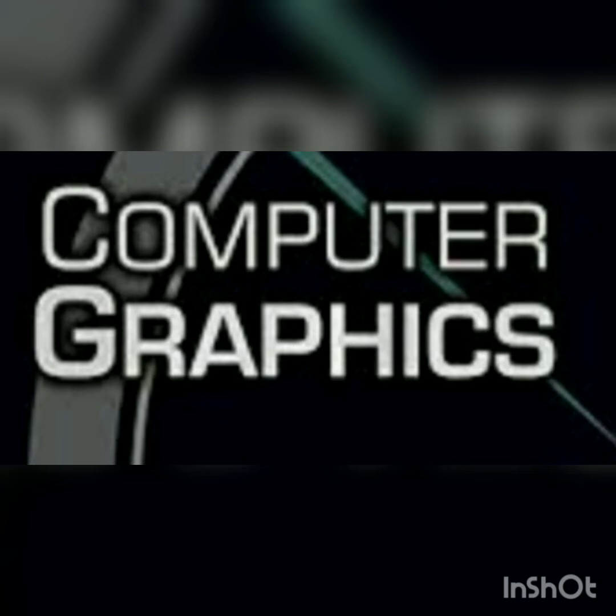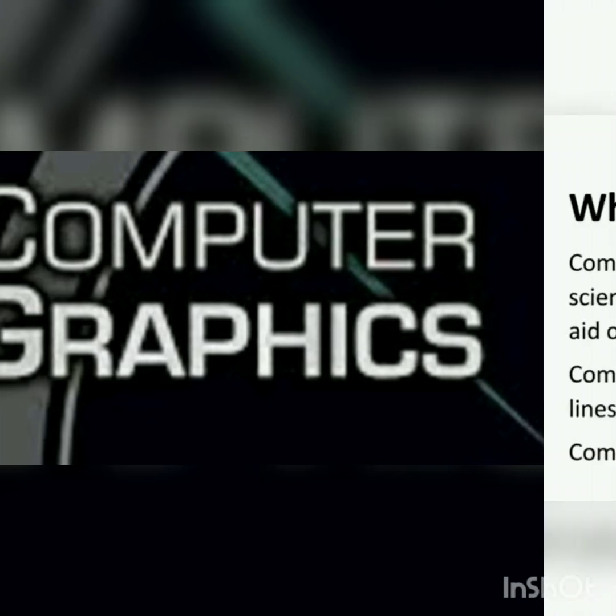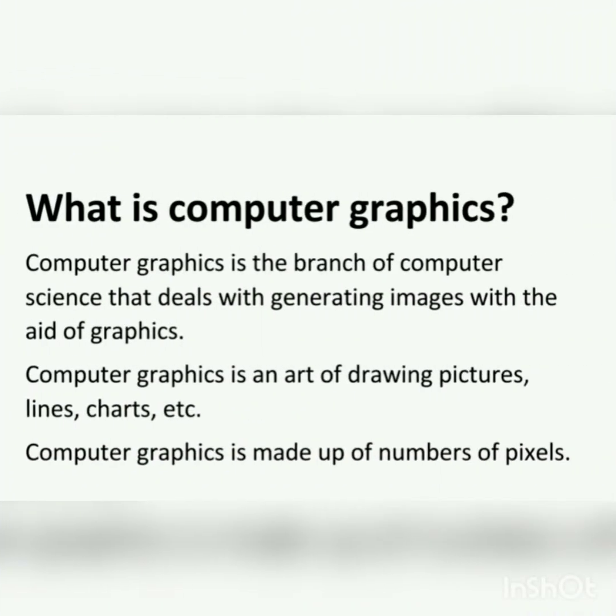What is computer graphics? Computer graphics is the branch of computer science that deals with generating images with the help of graphics. Computer graphics is an art of drawing pictures, lines, charts. Computer graphics is made up of numbers of pixels.